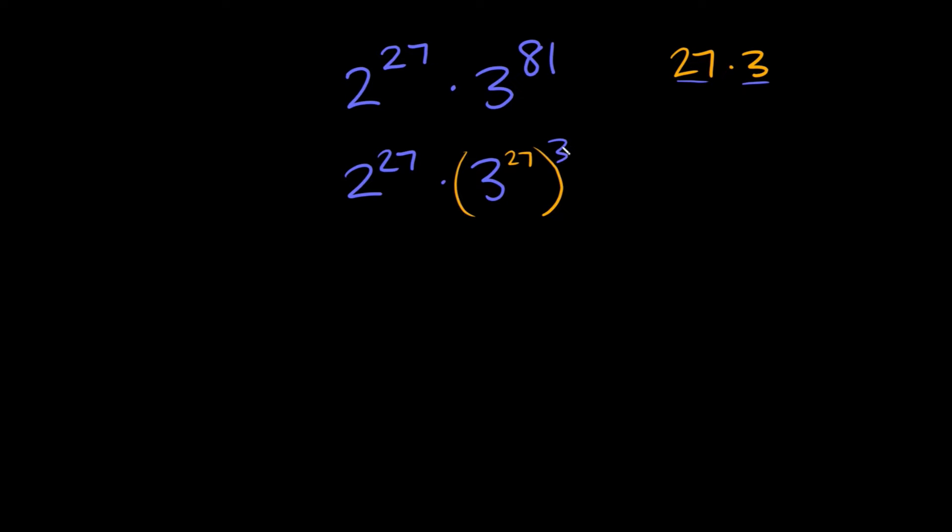Or we can flip it. We can put this 3 inside and we can put the 27 outside. And in this specific case here we want to put the 3 inside and the 27 on the outside. The reason for that is because now it matches the 27 that we have out here.